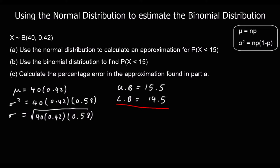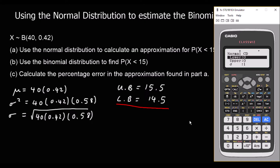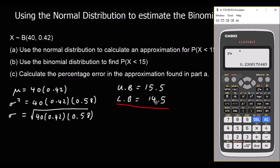So we're going to be using an x value of 14.5 for the normal approximation, and now we're ready to pick up the calculator. We want menu number 7, and we're using the normal cumulative distribution, so number 2. We want everything up to 14.5, so for the lower bound we put in a really small number like minus 100, going up to 14.5. Our standard deviation is the square root of 40 times 0.42 times 0.58, and the mean is 40 times 0.42. We get our probability of 0.231 to 3 significant figures.